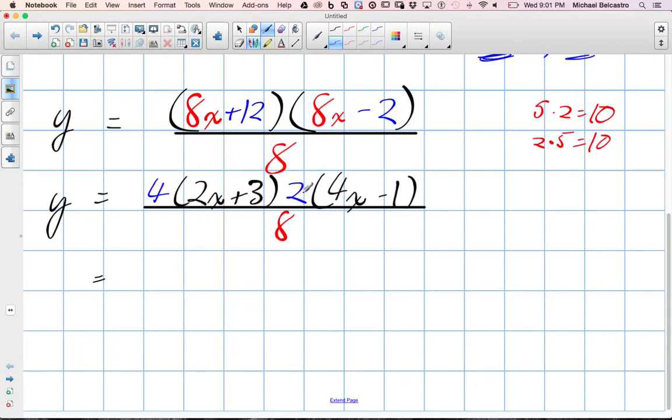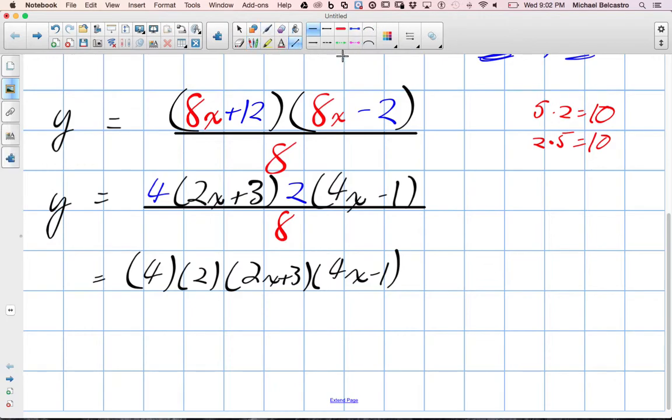Let's put the two constant terms beside each other. So it's 4 times 2 times 2x plus 3 times 4x minus 1. And I'm showing every single step. Eventually you'll get so good at this, you can just kind of skip this step I'm showing here. Can we figure out what 4 times 2 is? 8. So these become 8.